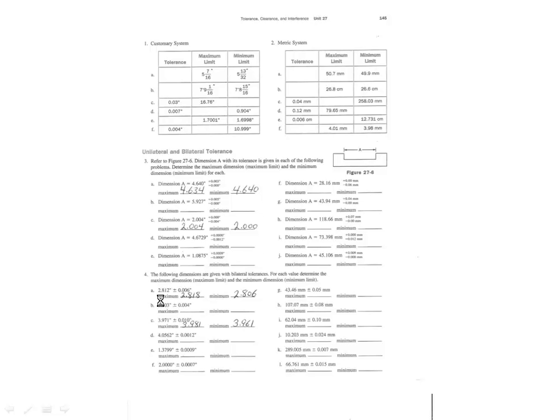Under number 4, it says 2.812 plus or minus — these are bilateral tolerances — plus or minus 6 thousandths. So we can add and subtract from this number and be within the range. If we add 6 thousandths to 2.812, the maximum is going to be 2.818, and the minimum is going to be 2.806. Under C, we have a plus or minus 10 thousandths. The number we're shooting for is 3.971, so we can add 10 thousandths for a maximum of 3.981, and the minimum is going to be 3.961.